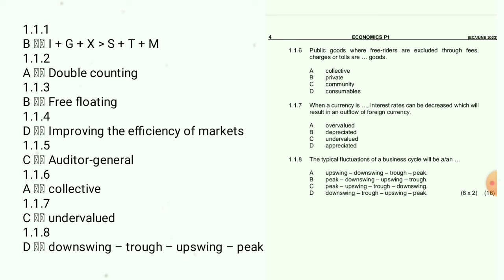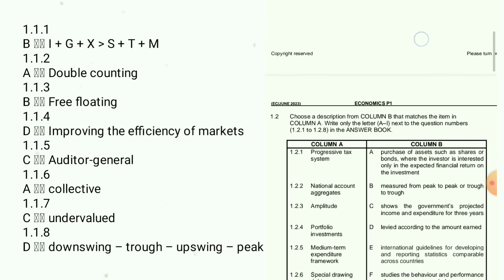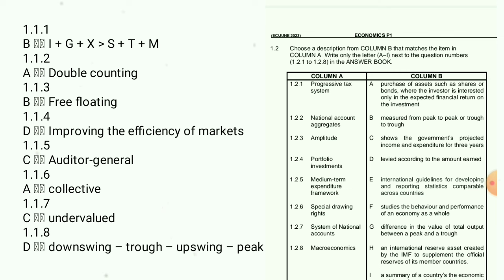I'll show the answers on screen after I'm done answering. 1.1.8: The typical fluctuations of a business cycle — the answer is D: downswing and trough, upswing and peak.